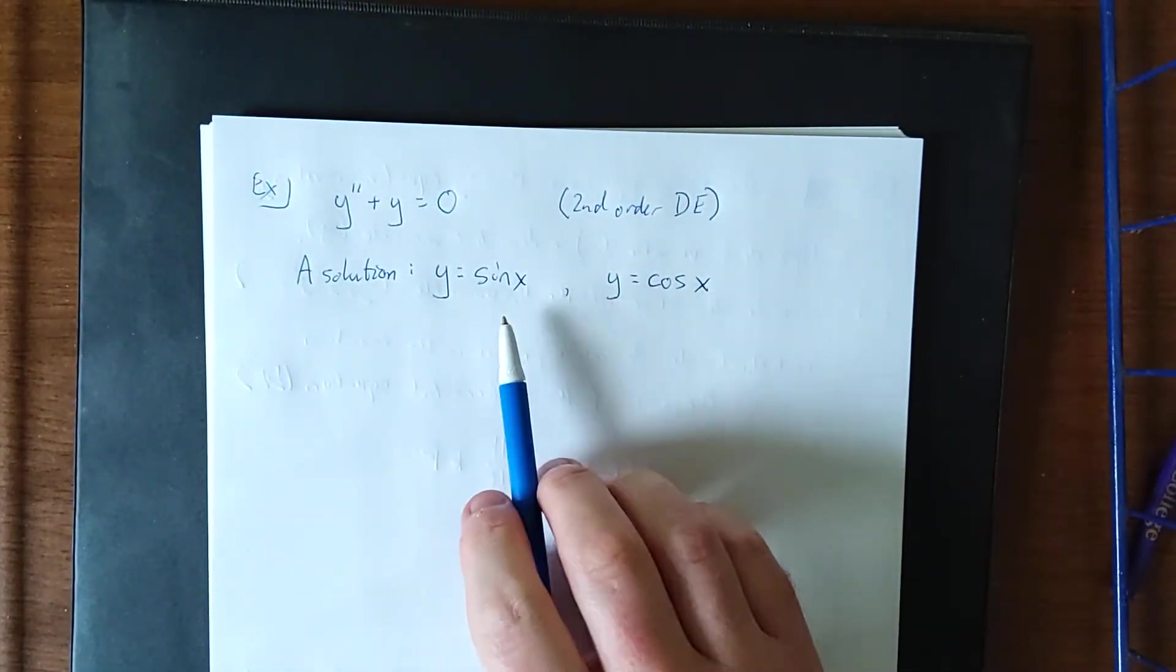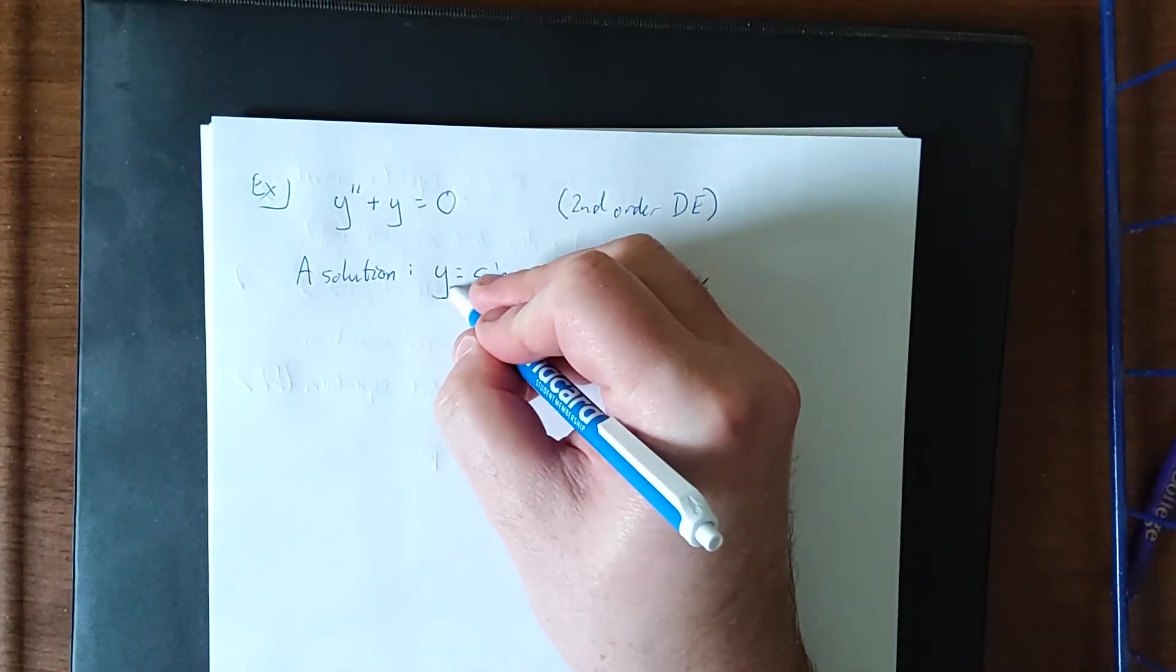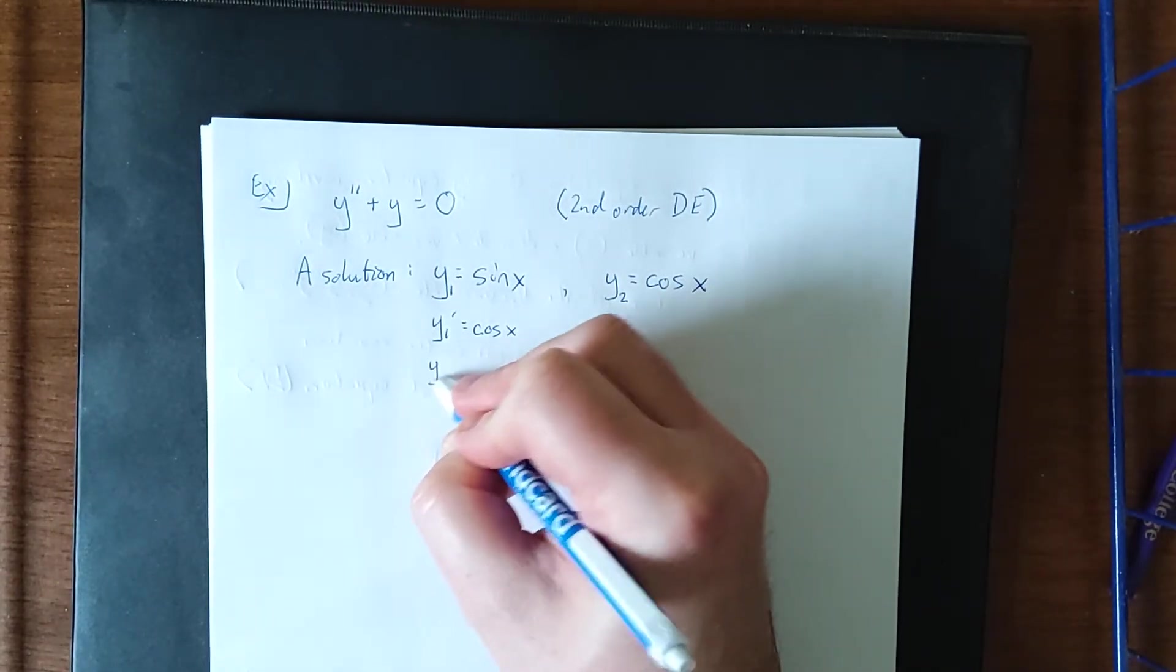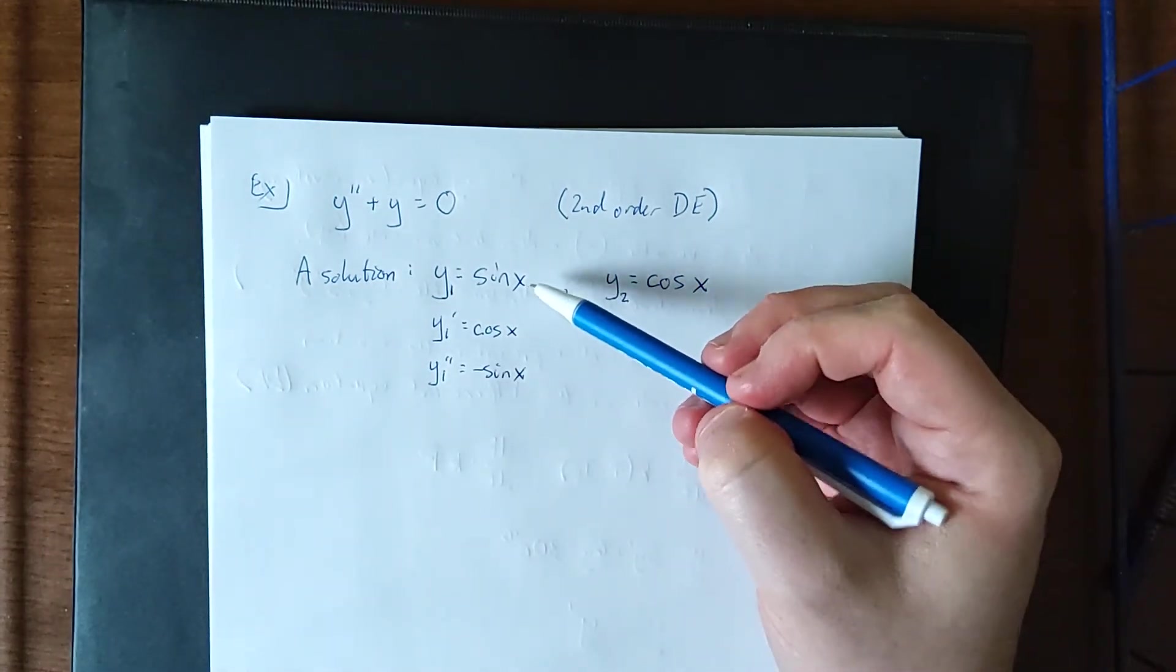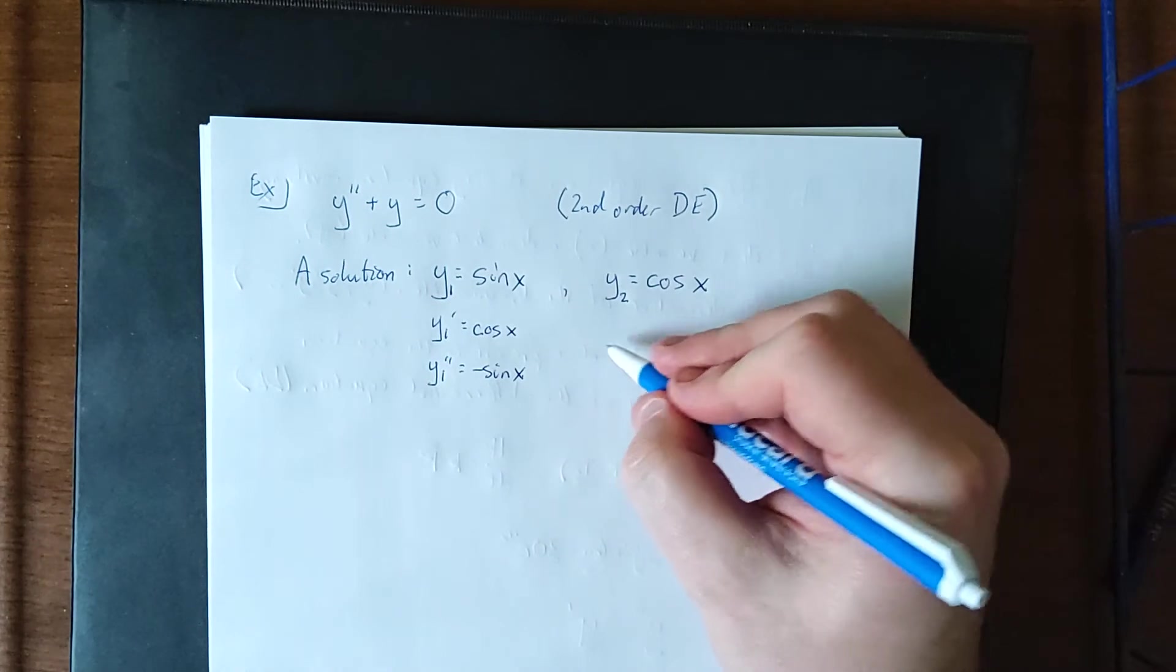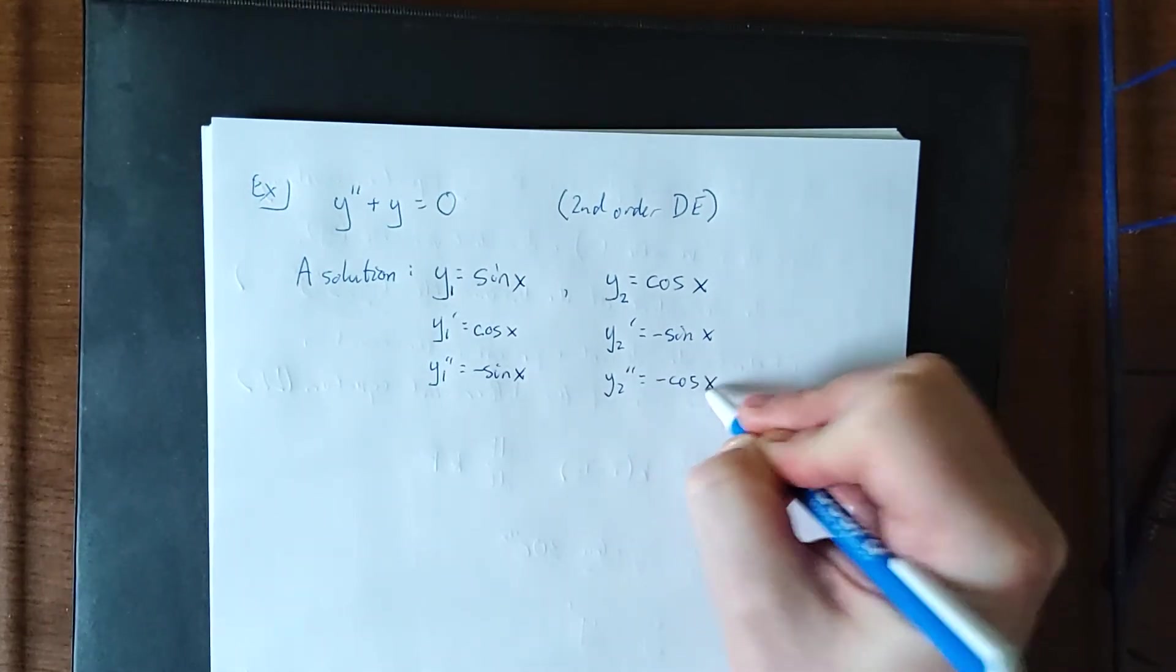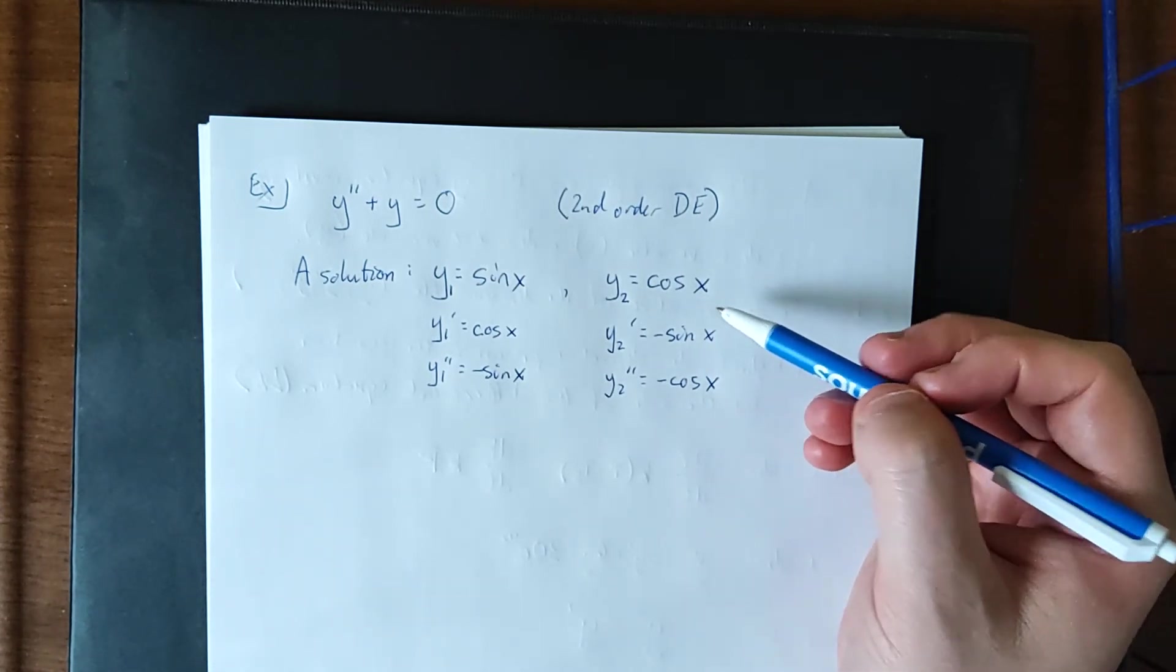Both of these individually would be solutions of this differential equation. We'll even refer to them as y1 and y2. This is due to the fact that the first derivative of the sine of x is equal to the cosine of x and the second derivative would be equal to the negative sine of x. Plugging these in and adding negative sine of x plus sine of x would in fact give us zero. y2 prime would be negative sine of x and y2 double prime would be the negative cosine of x. Once again, if I take the second derivative and add it to the original function, I will wind up with zero.